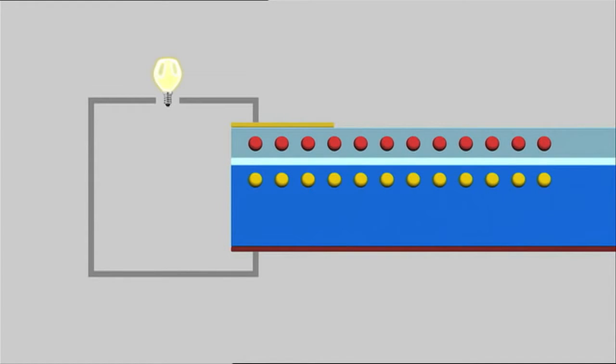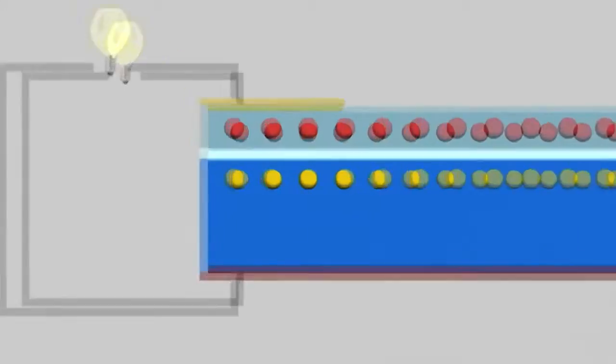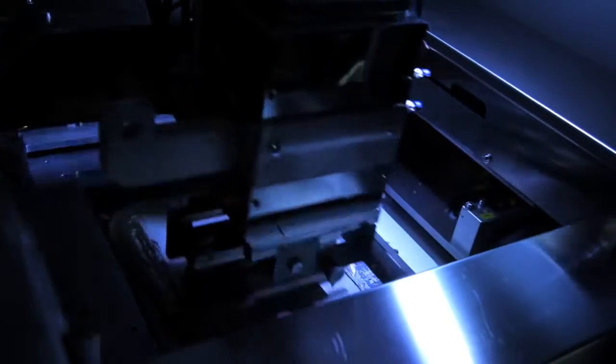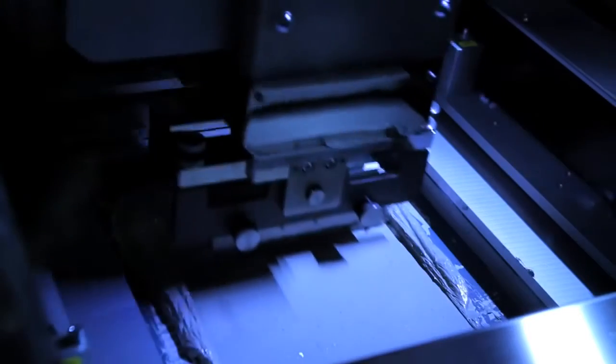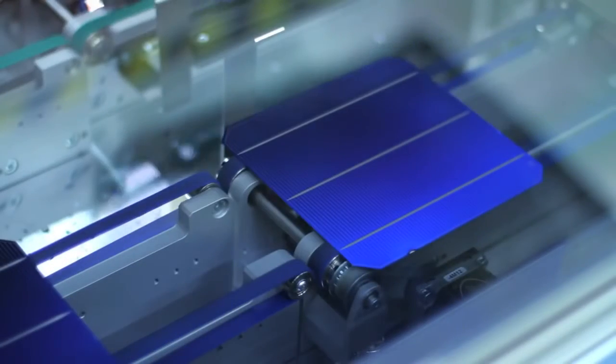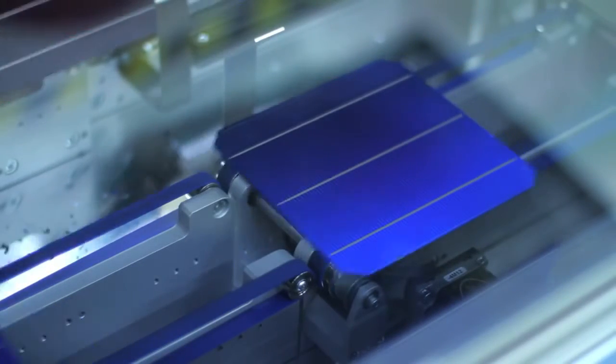But how is the power that is generated in the individual cells transported? A stamp presses a silver alloy onto the front of the cells. This creates the typical grid pattern. This silver coating ensures that the power can be transported later on.